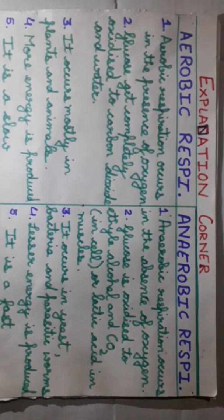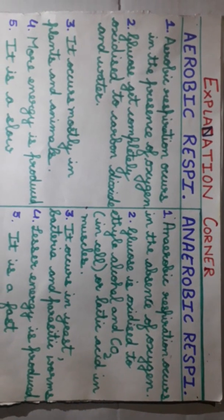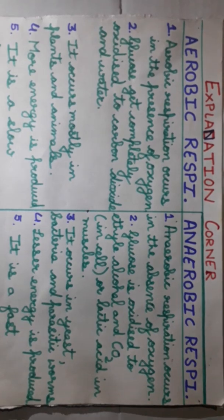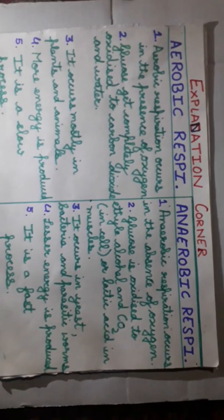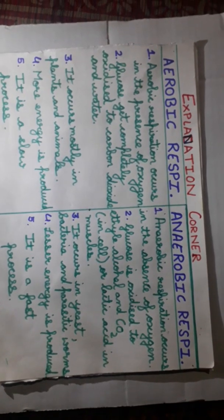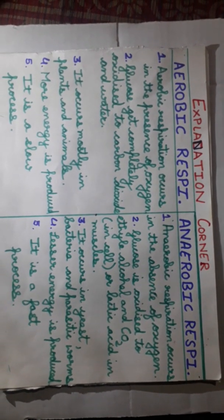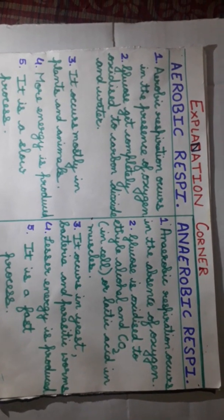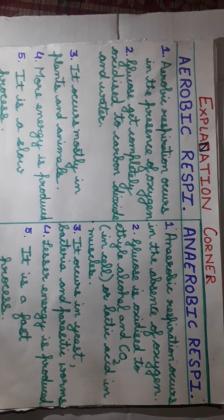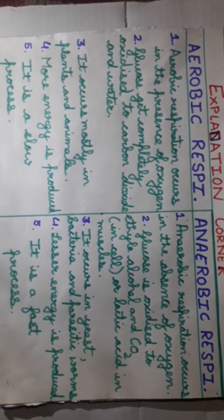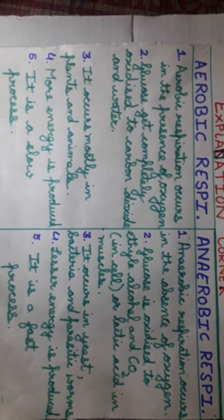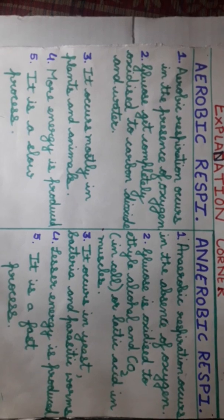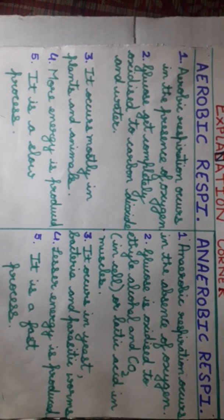Jab muscle cramps aate hain — matlab jab hum bhagte hain toh hamare pair dard hote hain — woh isi cheez ki wajah se hote hain. Kyunki hamaari oxygen supply kam hoti hai aur hamaari muscles anaerobically respire karna shuru kar deti hain, aur lactic acid produce hota hai, jis wajah se muscle cramps aate hain.